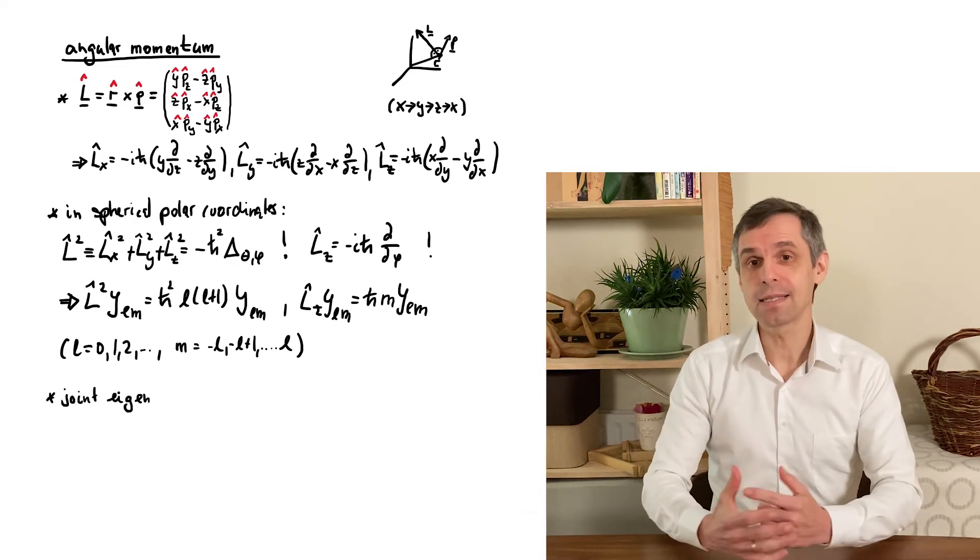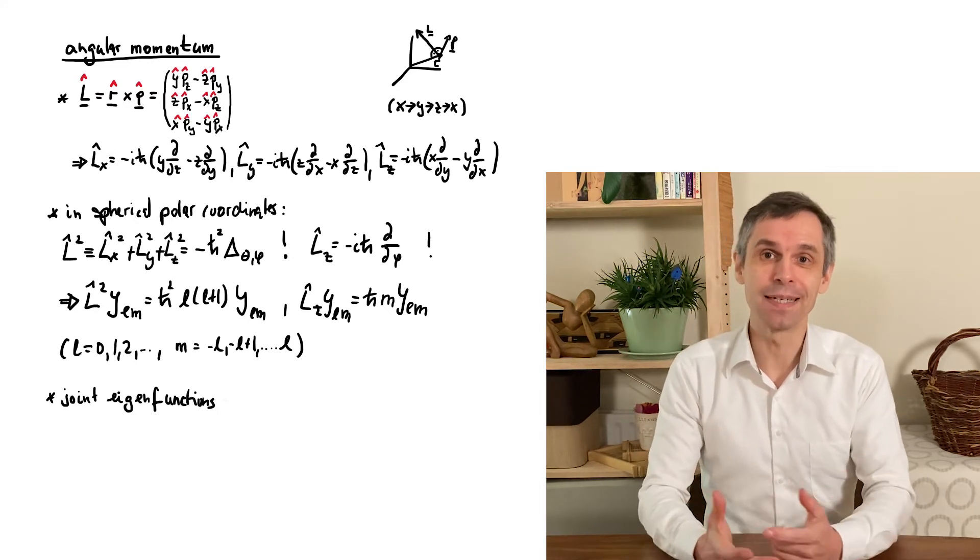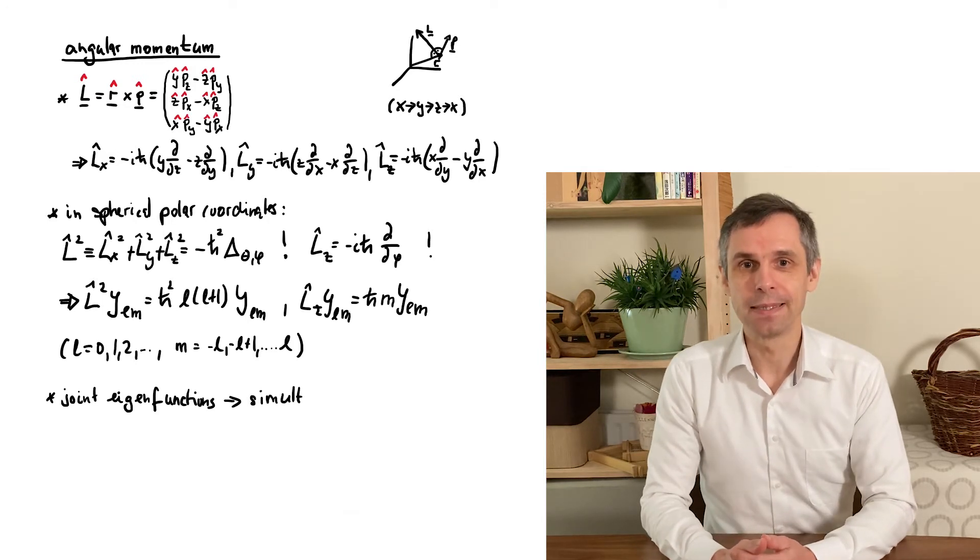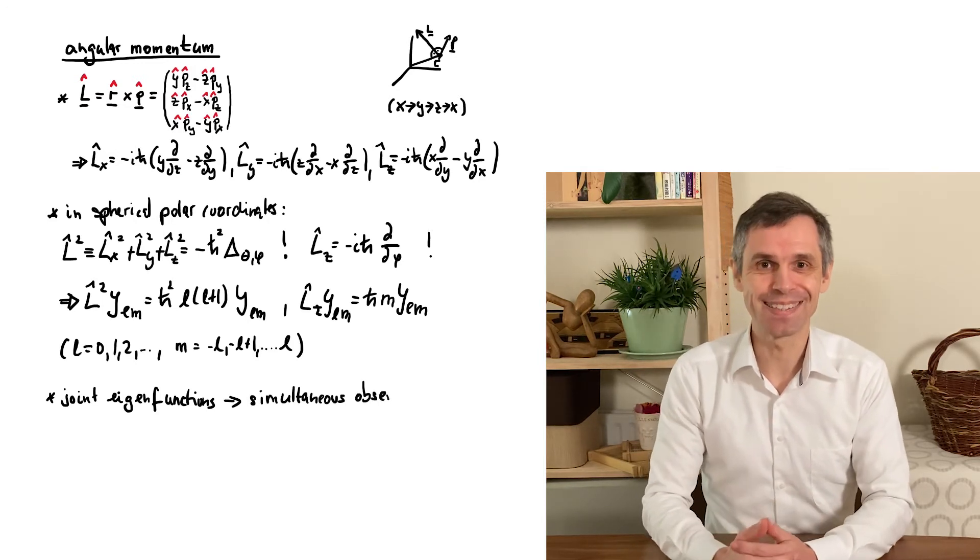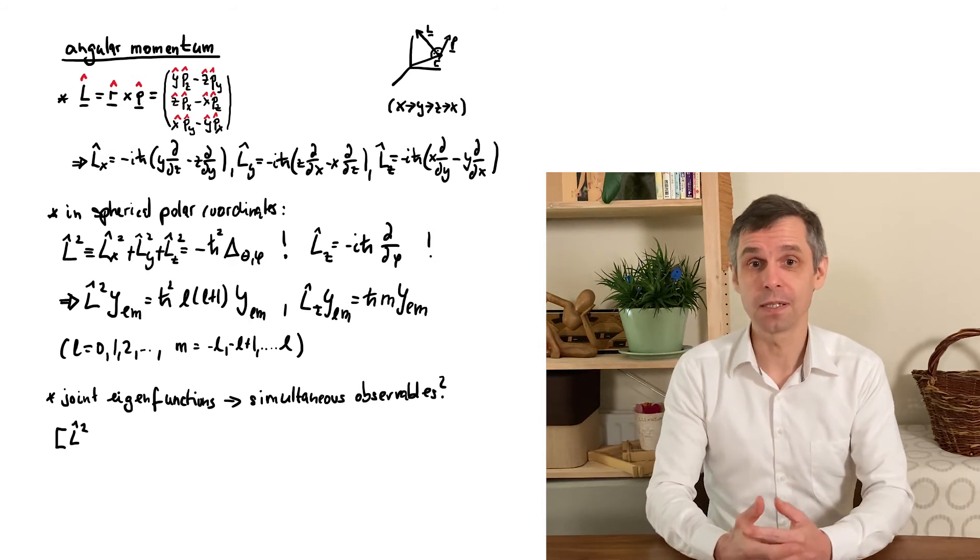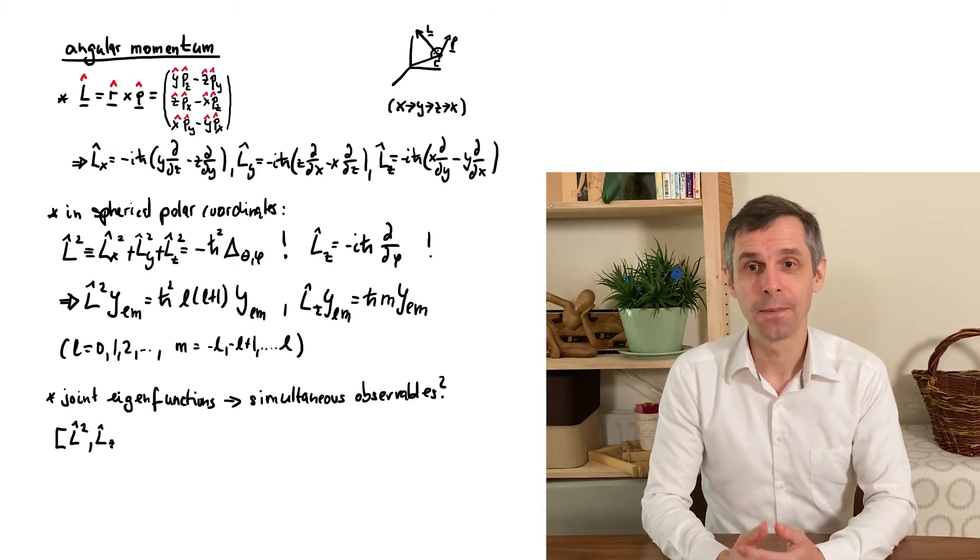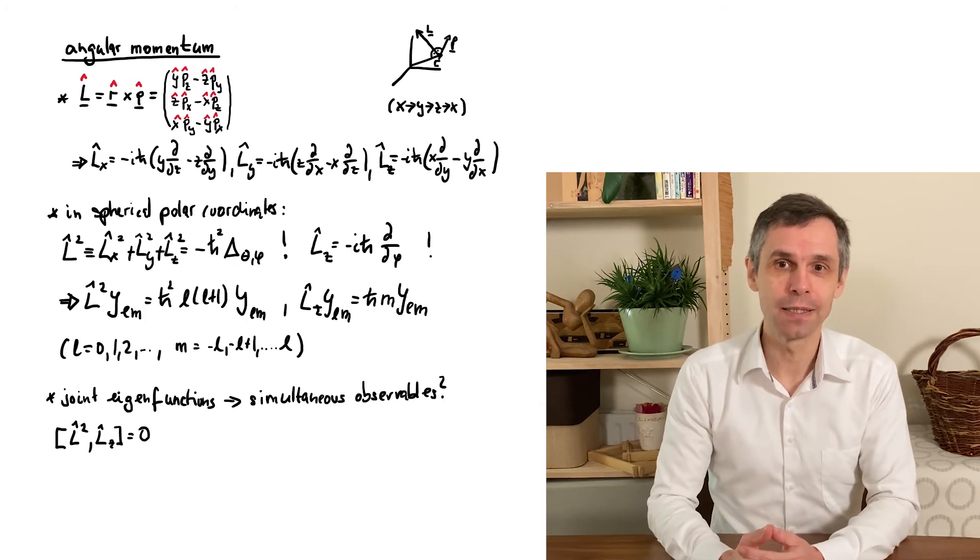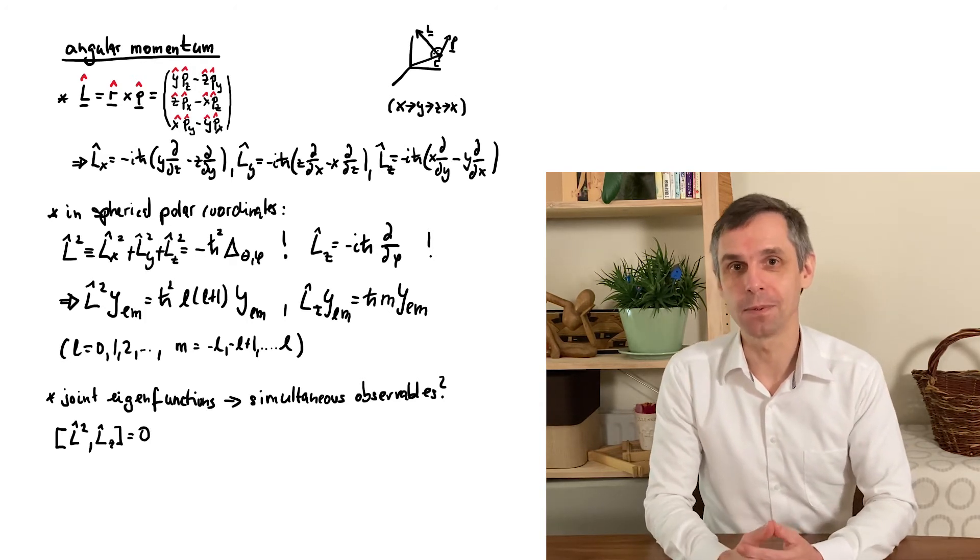In any case, this suggests that L squared and Lz are simultaneous observables, and we indeed find that their commutator vanishes. You can see this either by working out the effect on a function in Cartesian coordinates, or simpler algebraically by using the known commutators between position and momentum operators.